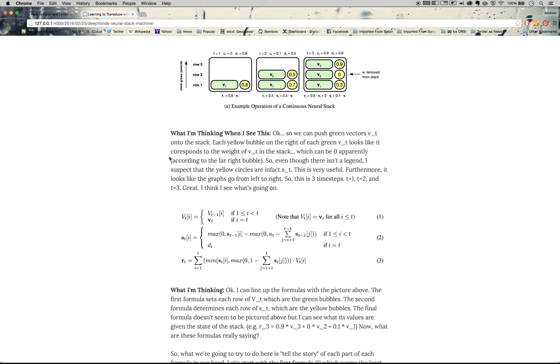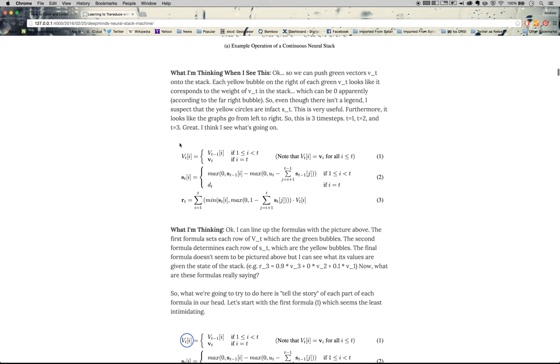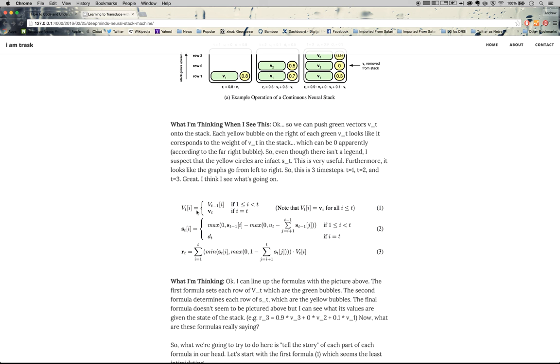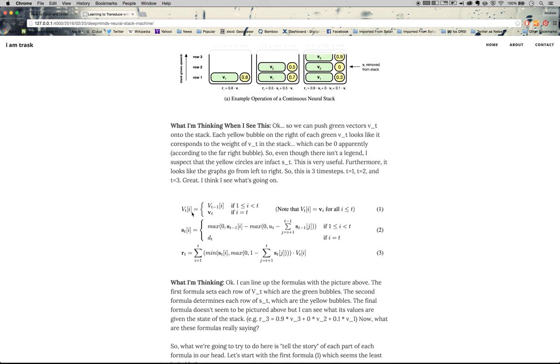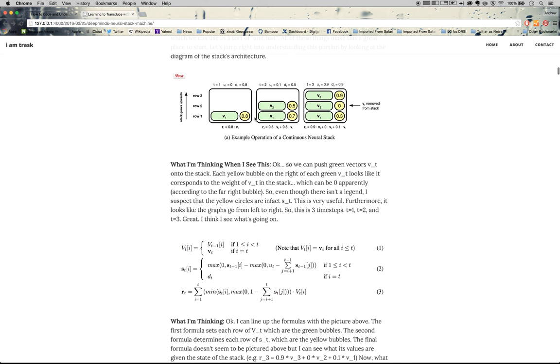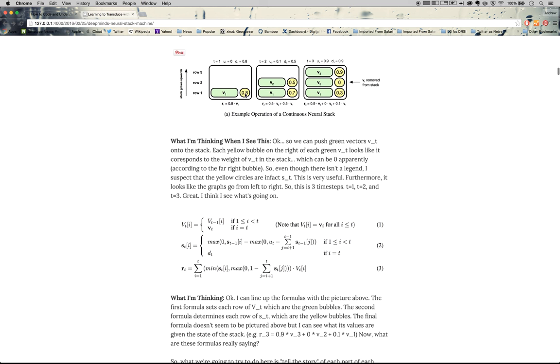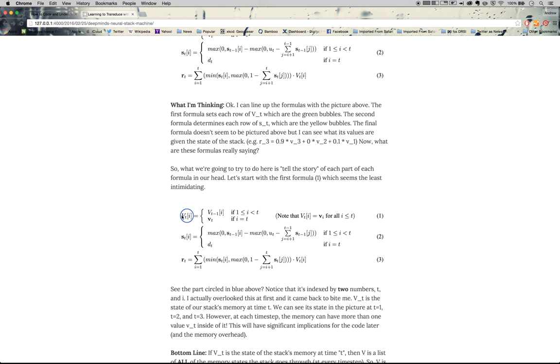We went through the pretty picture. Time to look at the formula. So here are the three core formulas dictating the operation of the stack. If you remember from the previous lecture, VTI is the memory. So it's this big box. It has all these VTs in it. So V1, V2, V3, right? ST, these yellow guys, they're the strengths. And RT is sort of the reading head, right? So it's the value of the stack with respect to whatever's reading at any given time.